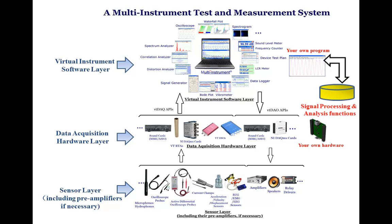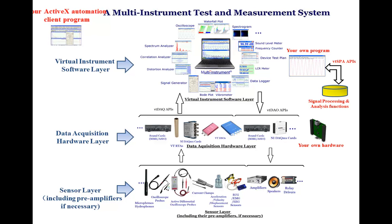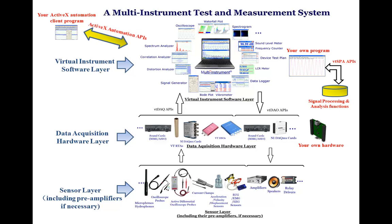Multi-Instrument comes with a complete suite of APIs for generic signal processing and analysis, called VT SPA APIs. These APIs contain some unique algorithms originated and only available from Virtins Technology, and will save you a lot of effort when developing your own program. Multi-Instrument can also work as an ActiveX automation server, allowing you to write your own ActiveX automation client program to control and share data with Multi-Instrument through the ActiveX automation APIs.